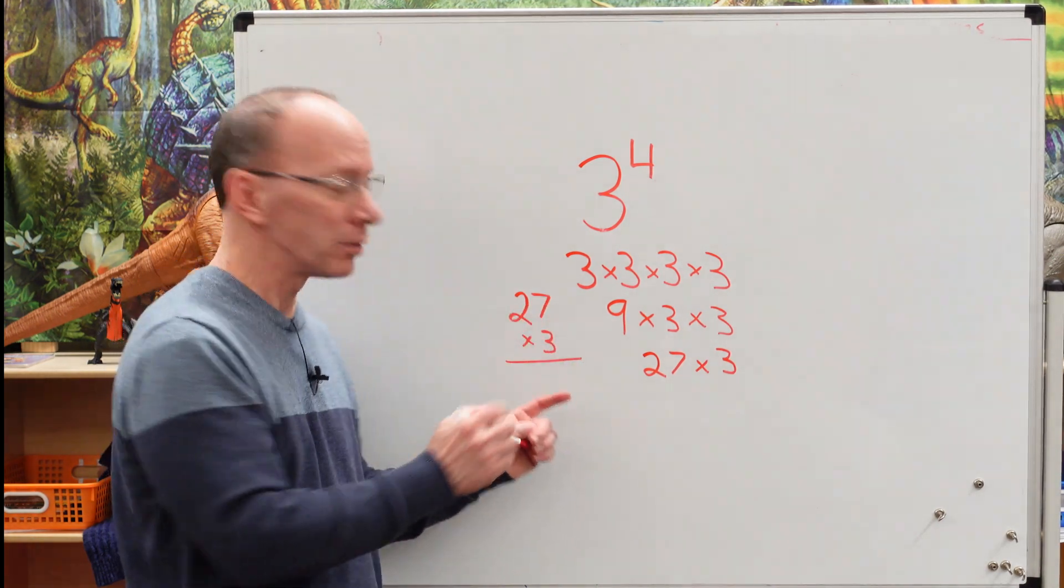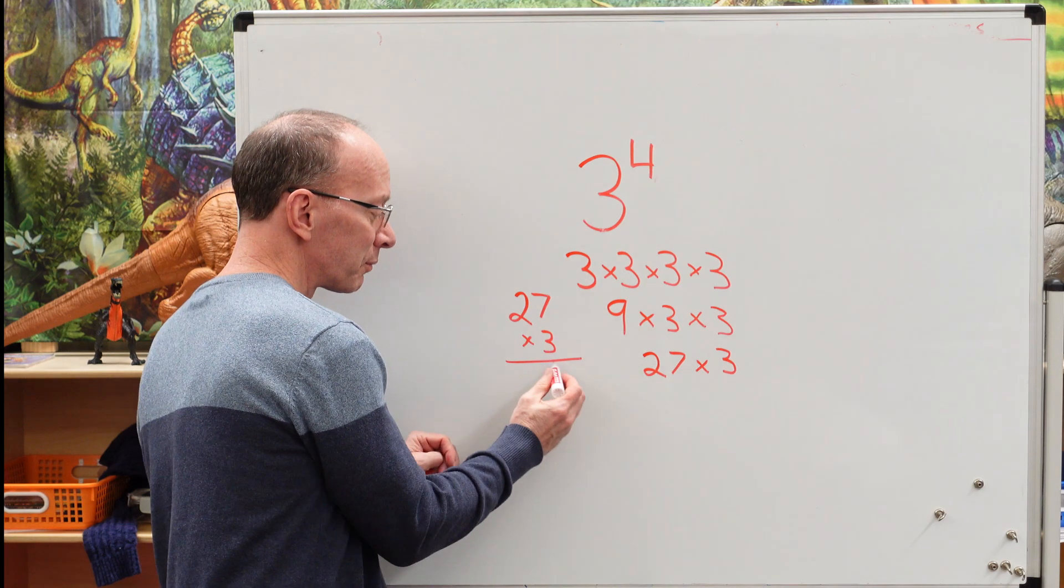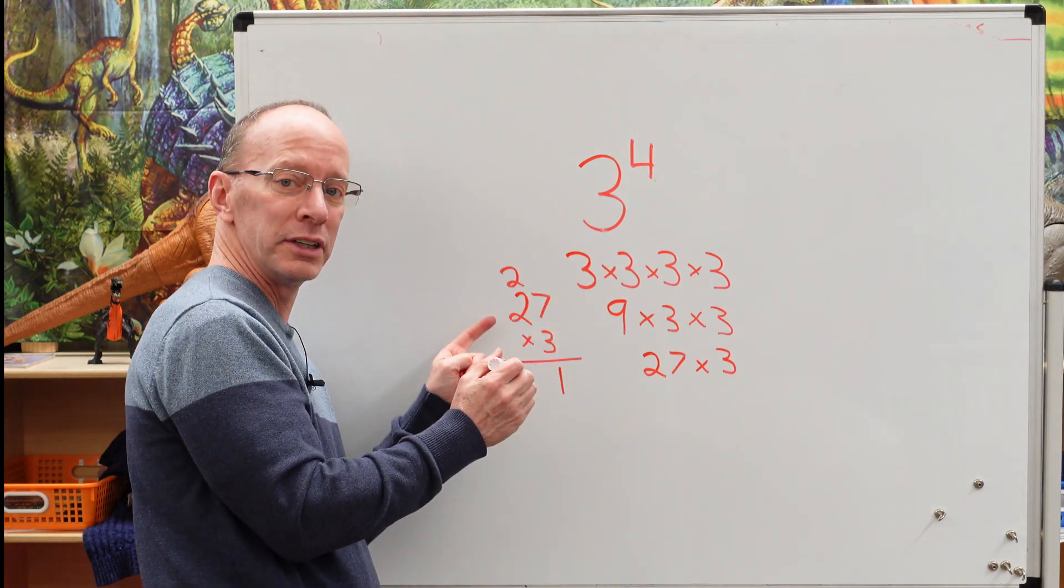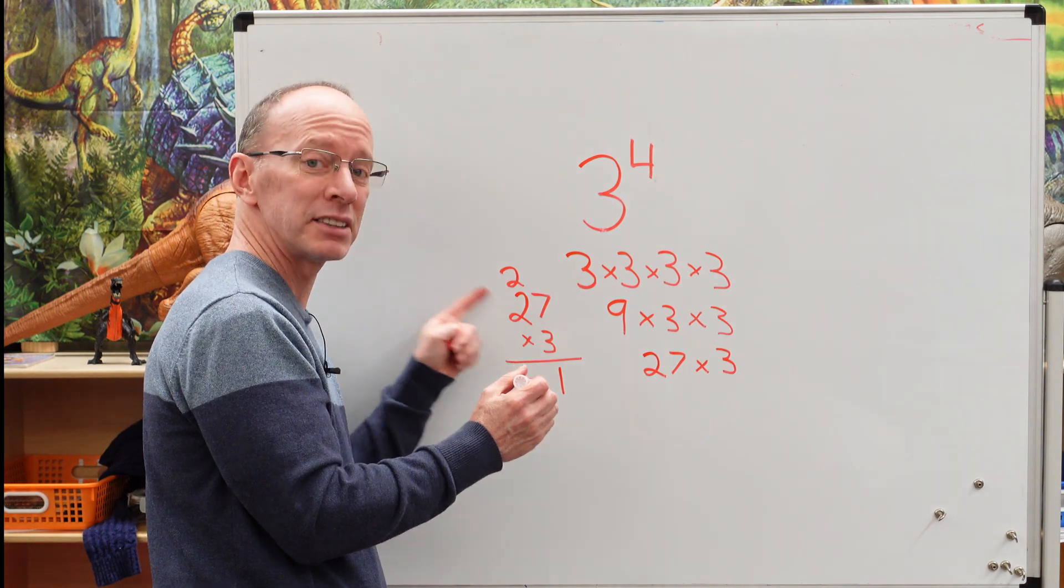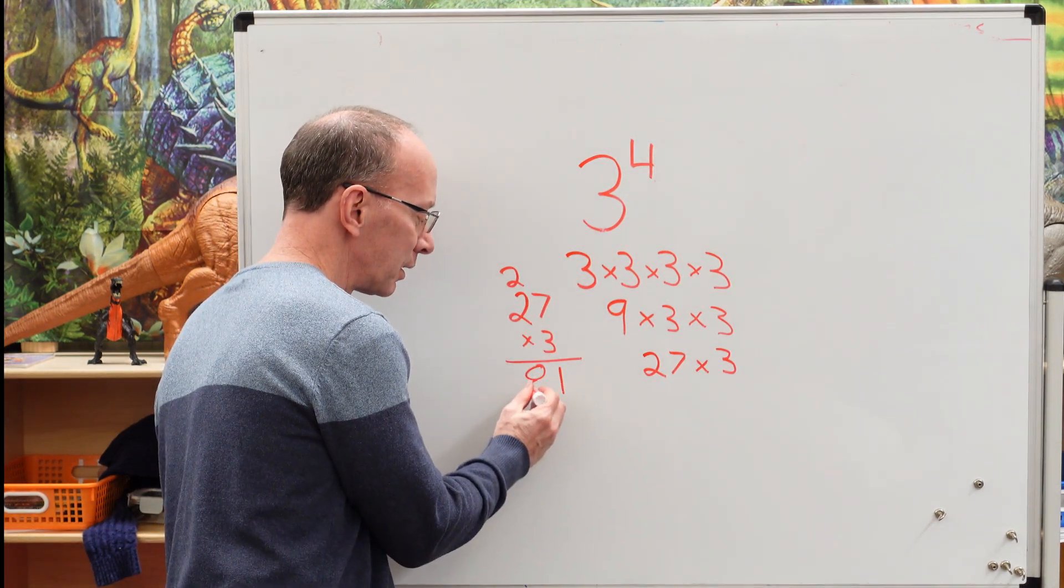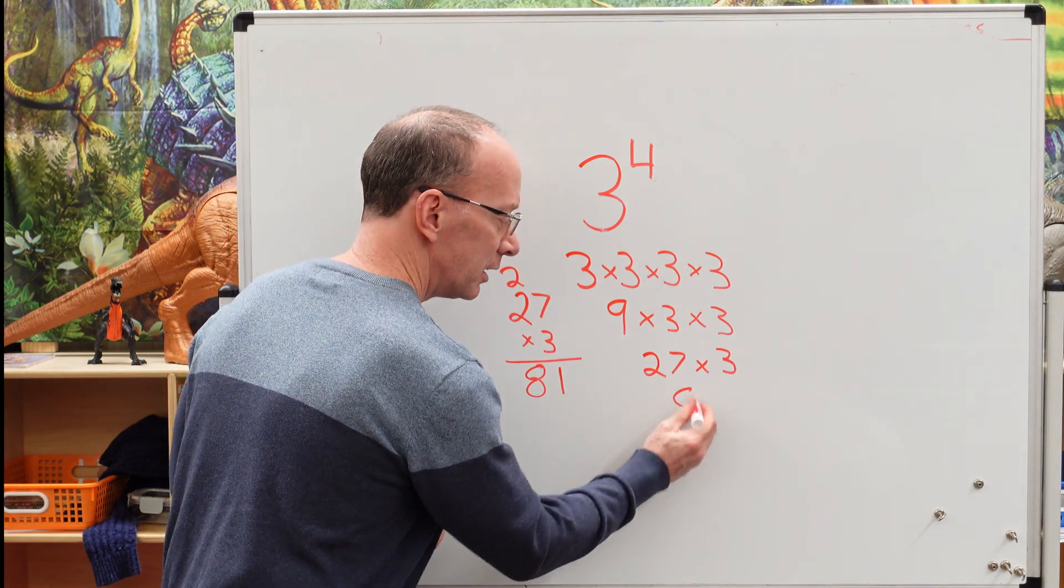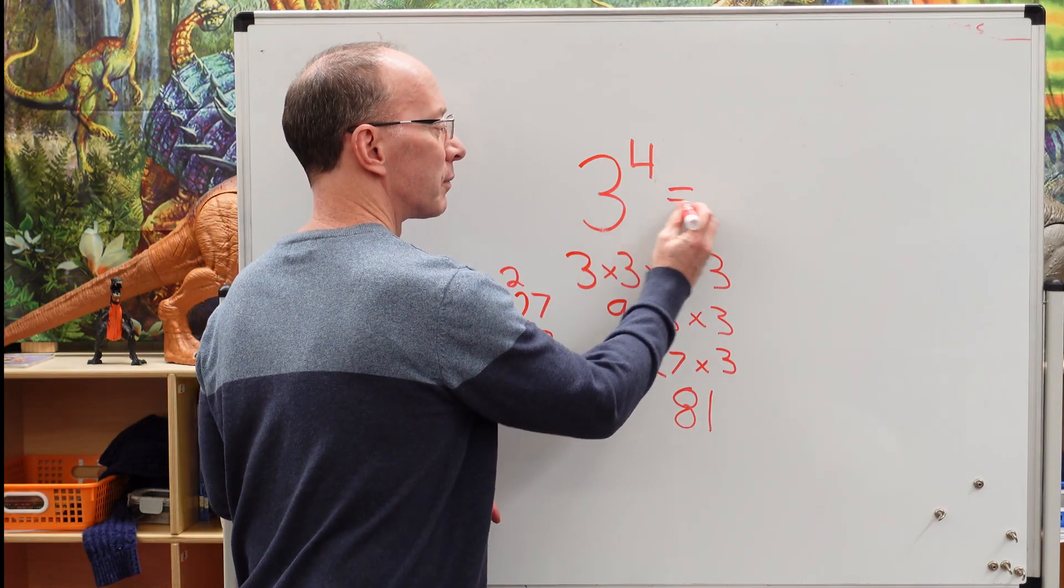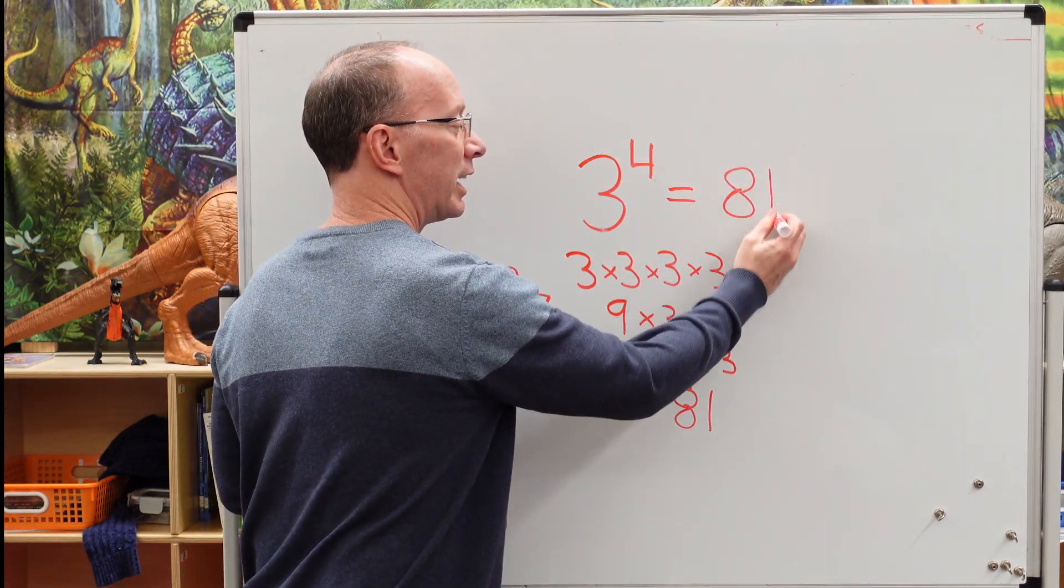So seven times three equals 21. Put the two up there. Three times two is six plus that two. Don't forget about that two. So six, seven, eight. So I have 81. Three to the fourth power equals 81.